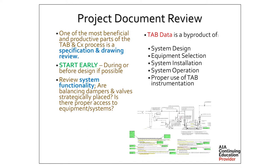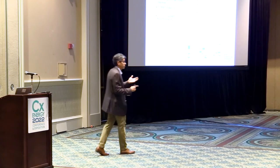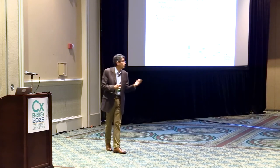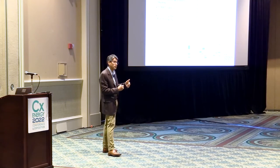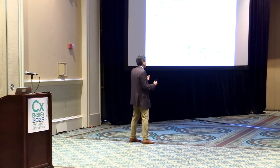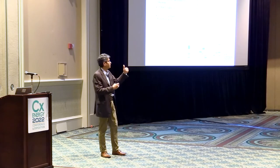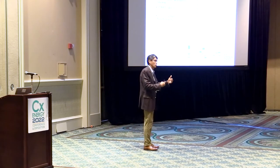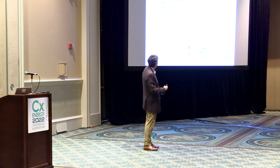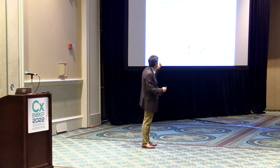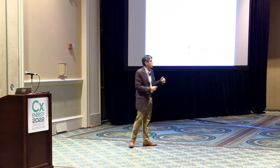One of the big things we always like to start with is a project document review — both in commissioning and the TAB process. Anything we can do on paper before it's installed in the field is going to be a big savings: monetarily, time-wise, headache-wise, and conflict-wise. If we can get a document review done as early as possible — predesign, before things get hard and fast on the drawings — we love to promote that. The data we produce is based on system design, equipment selection, system installation, system operation, and proper use of TAB instrumentation.